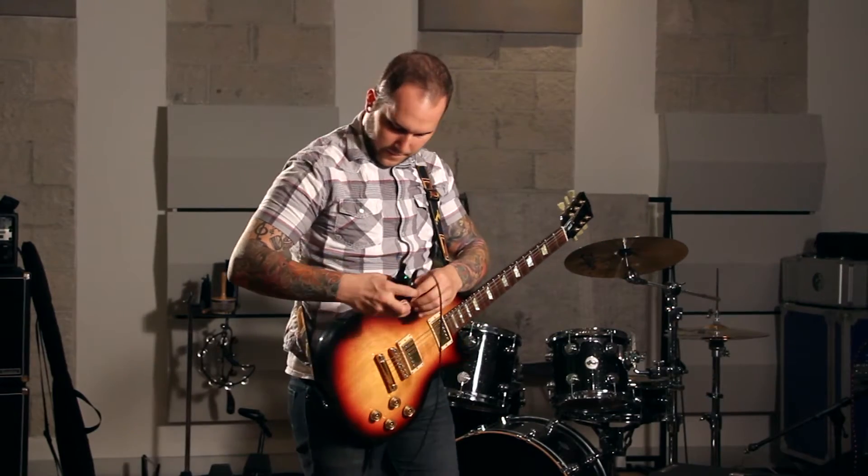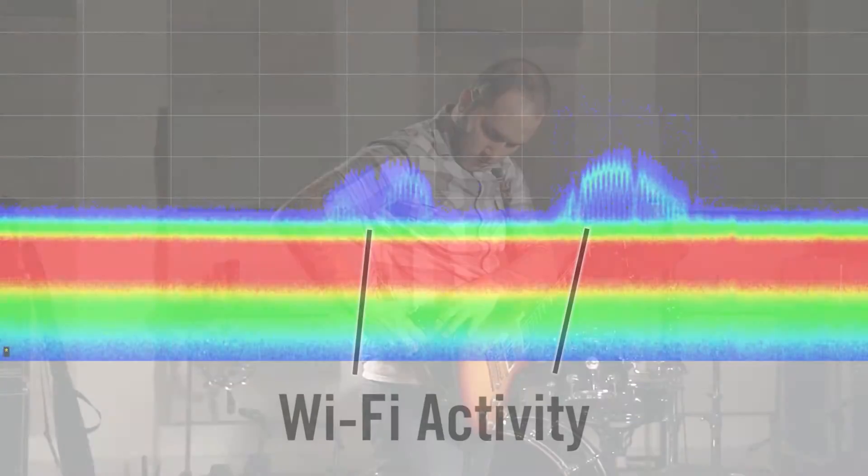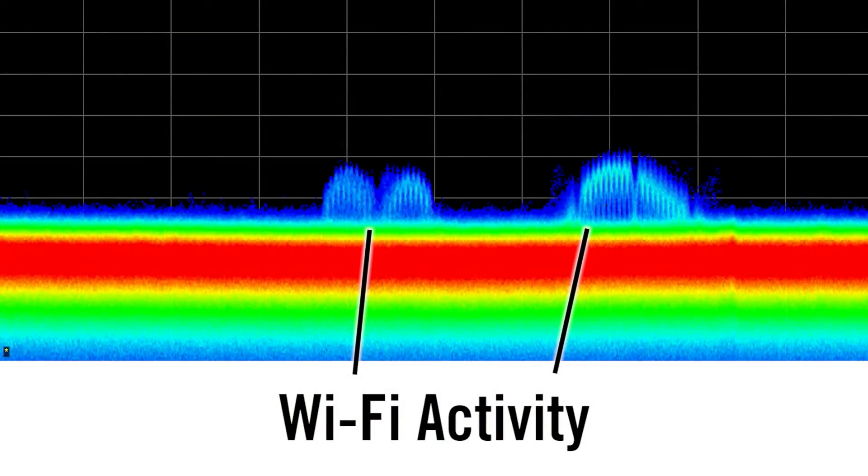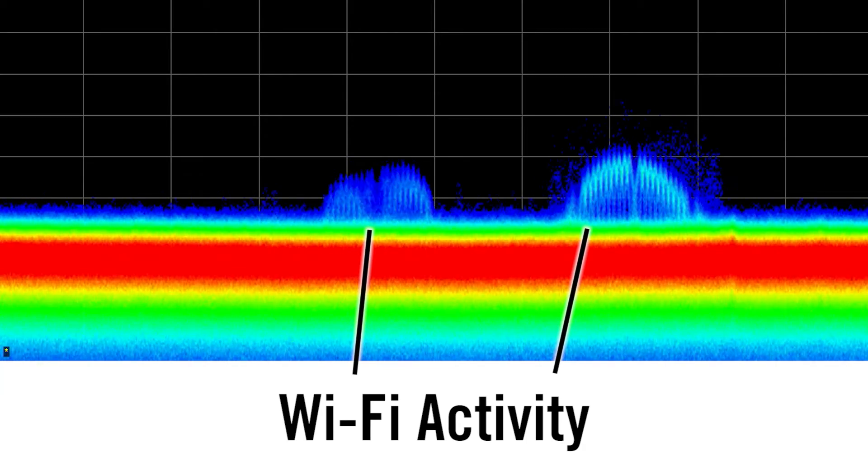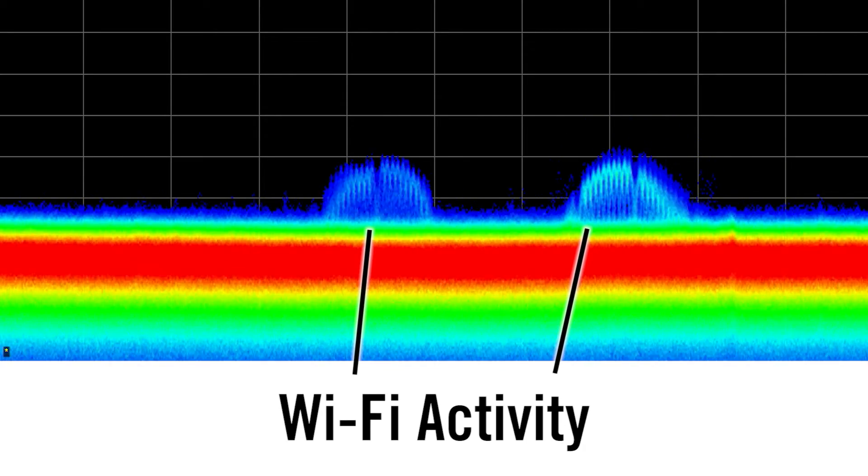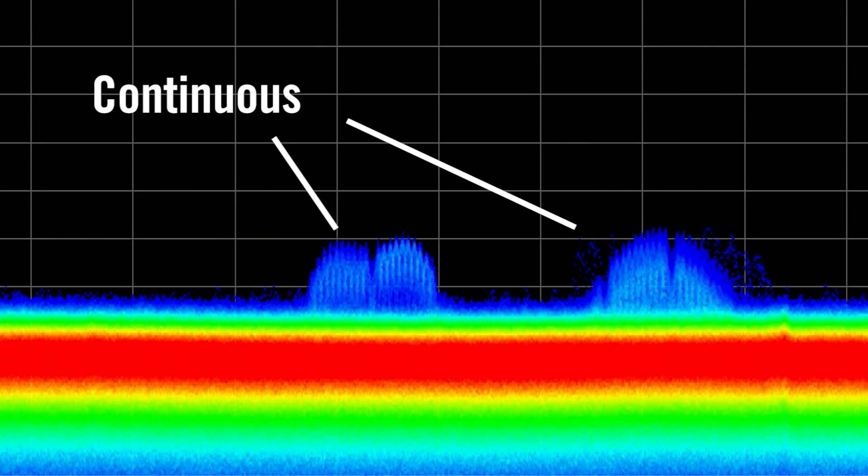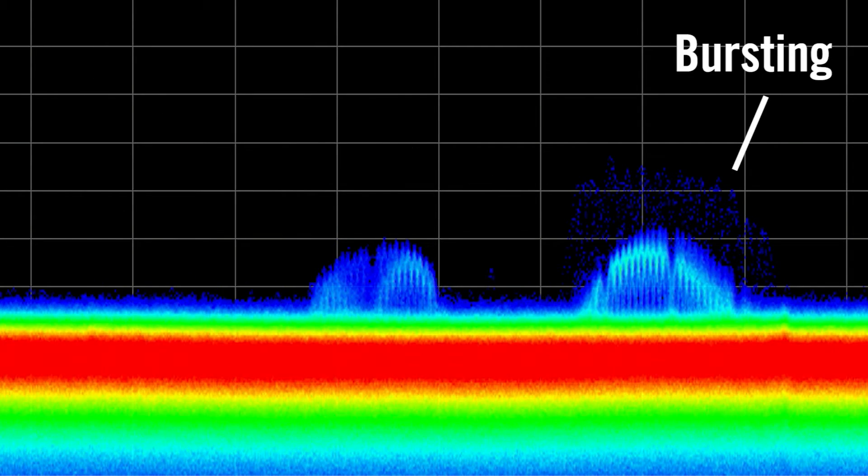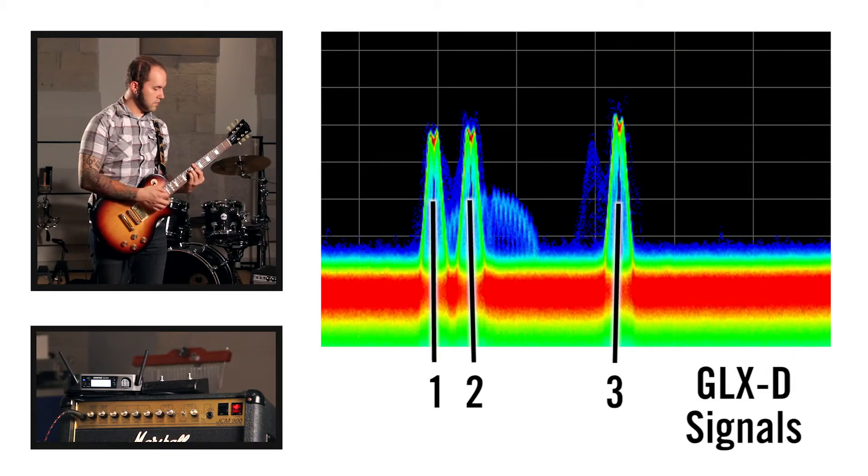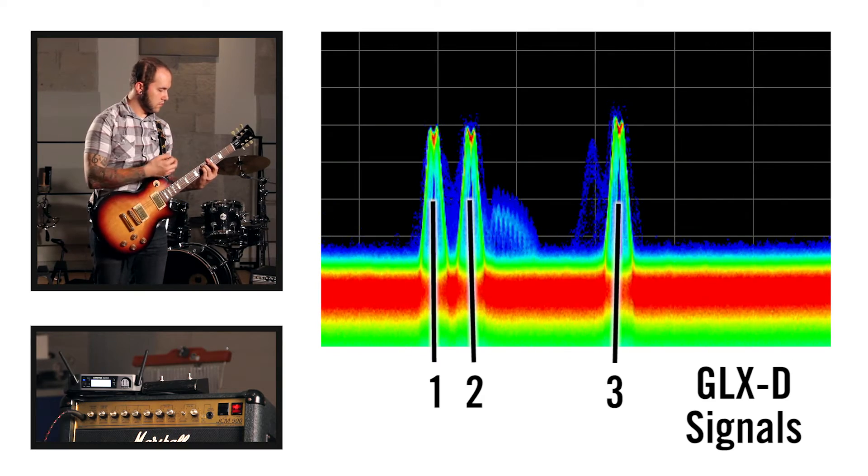Here's an example of how it works. Here's a scan of the 2.4 GHz frequency band showing the Wi-Fi activity in this room. There are two kinds of traffic shown here, continuous traffic and bursting traffic. These three signals are from the GLXD transmitter.